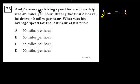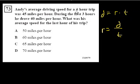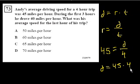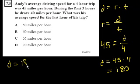Distance equals rate times time. His total distance over the four-hour trip at 45 miles per hour: distance equals 4 times 45. That's 180 miles.